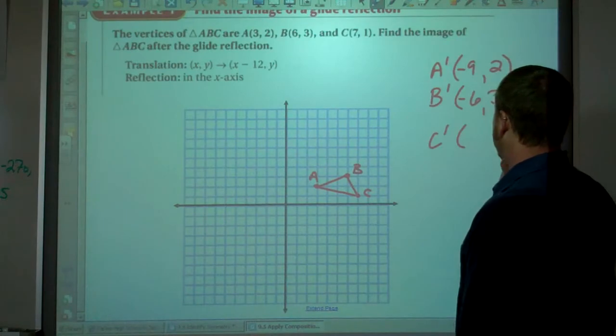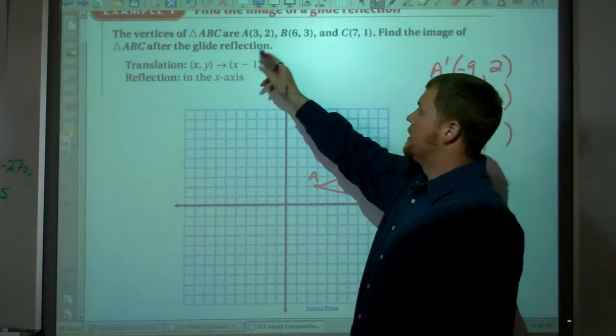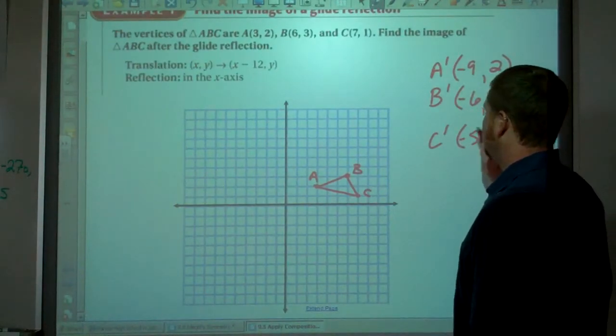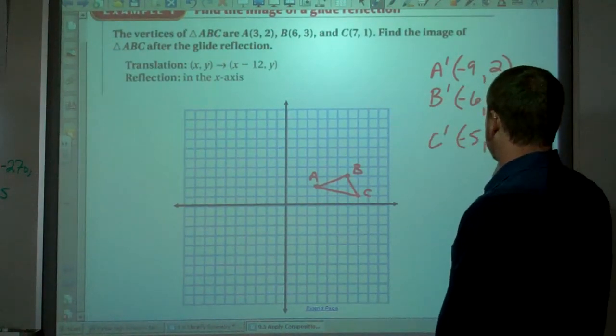And then C prime. Again, translation is x minus 12. So 7 minus 12, that's negative 5. And then y stays the same, 1.